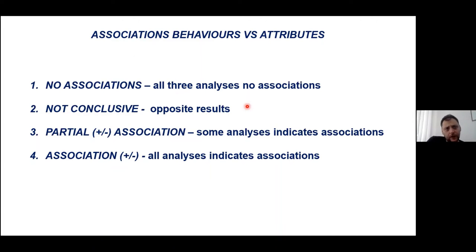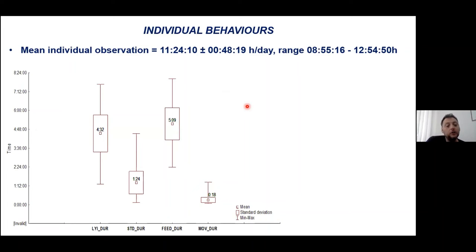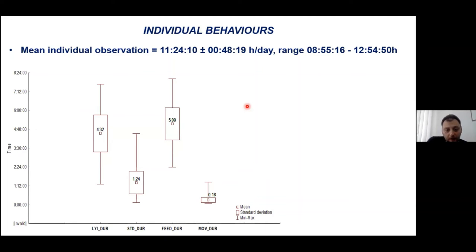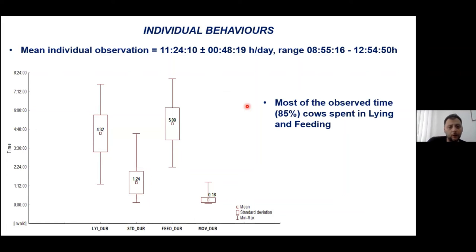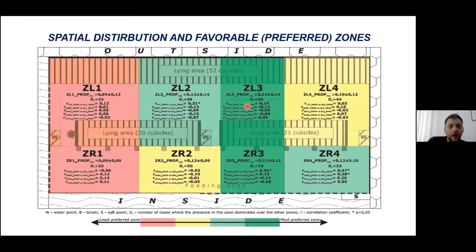In the results, the mean individual observation per cow was 11 and a half hours. About 80 percent of the time, cows were lying or being at the feed banks. Standing duration during observation was one and a half hours, and approximately 80 minutes of total movement during the observation period.